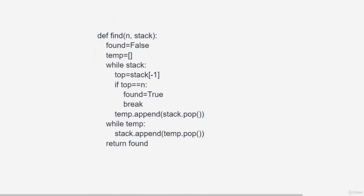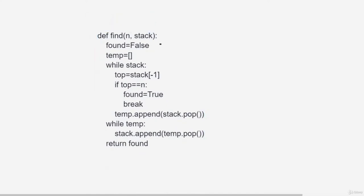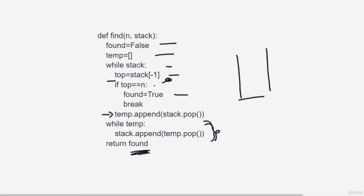Here is the code: n and the stack are given. We have found = False and a temporary stack. While the stack is not empty, we pop the top element. As soon as top equals n, we set found = True and break. Note we are only peeking at the top without permanently modifying if not needed — if False, we append to temporary. Whether found or not, after the while loop, we restore: while temp is not empty, pop from temp and append back into the stack. This restores the original stack and returns True or False for found.